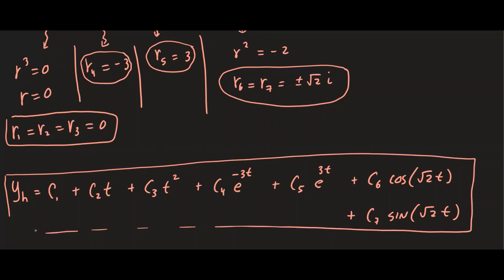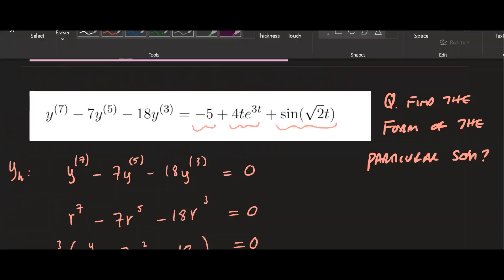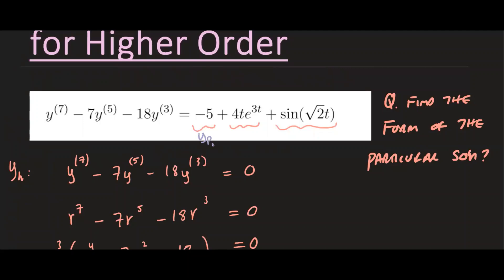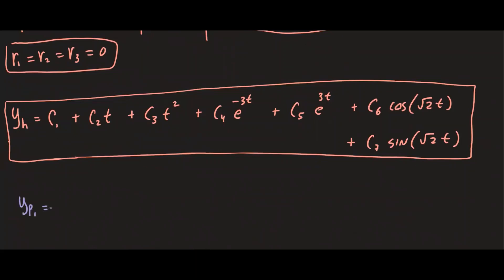Now we have to figure out the possible form of the particular solution based on the non-homogeneous right-hand side. We need a form for each piece: particular solution form one (yp1), form two (yp2), and form three (yp3). yp1 corresponds to the constant term negative five — a polynomial of degree zero — so let's call it just a constant, A.